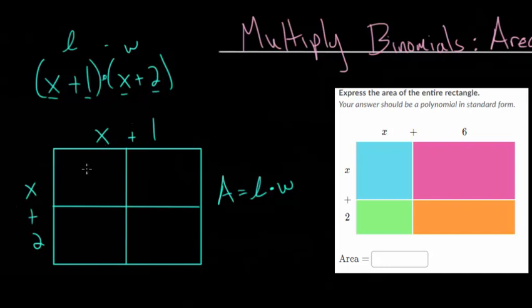And what we're going to do is essentially find the area of each of these small boxes, and then just add them together to find the total area of the rectangle. So for instance, the width of this box and the length are each x, and so the area would just be x times x, which is x squared.